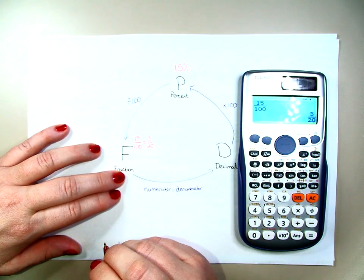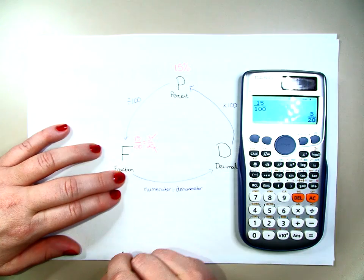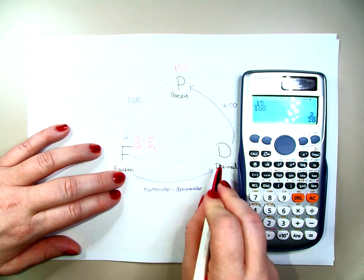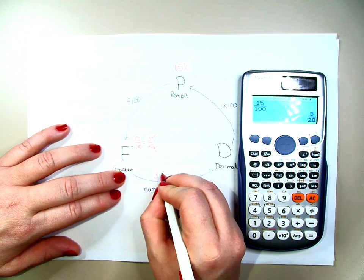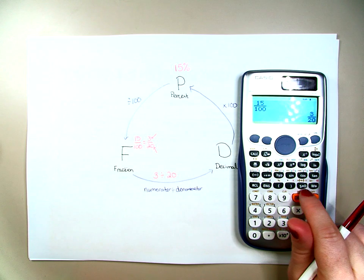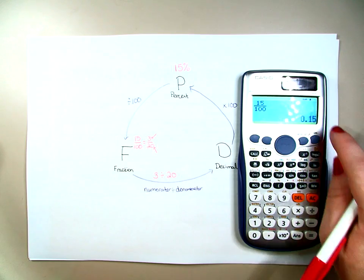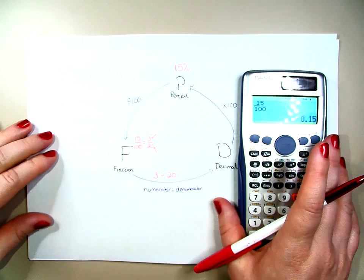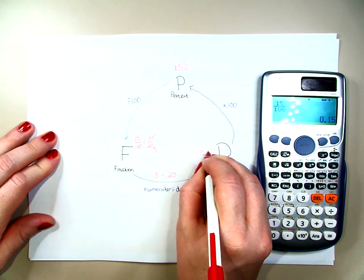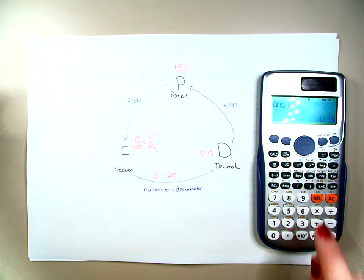Now, which is the numerator and which is the denominator? The numerator is the number on top, and the denominator is the number on the bottom. To convert to a decimal, we take the numerator and divide by the denominator. On the calculator, you can hit the S to D button — that stands for standard to decimal — and it will convert 3 over 20 into 0.15. And lastly, to convert 0.15 into a percent, we multiply by 100 and get 15%.